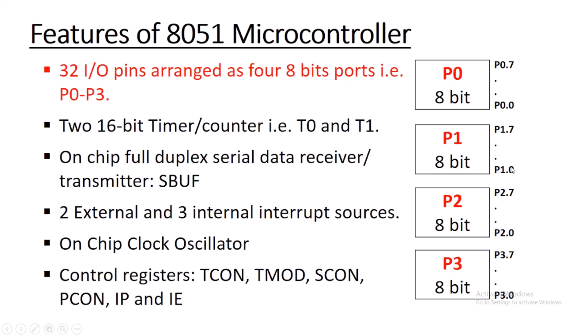8051 is having 4 ports. Since 8051 is available in 40 pins, out of 40 pins, 32 pins are arranged as four 8-bit ports: P0, P1, P2, and P3. All ports are 8-bit, and each port has its respective 8 pins — for example P0 has P0.0 to P0.7, and likewise each port has their respective 8 pins.